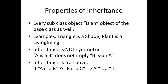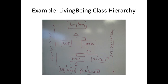Going back to the previous example: animal is a living being, and reptile is an animal, so by the transitive property, reptile is also a living being. For the symmetric property, every plant is a living being, but every living being is not a plant, because a living being could be an animal as well.